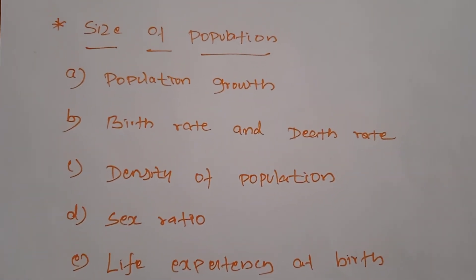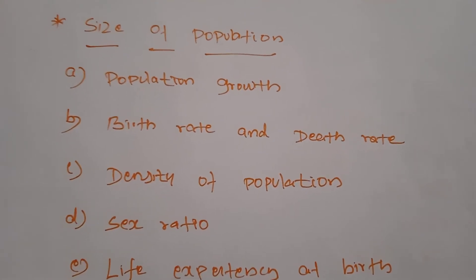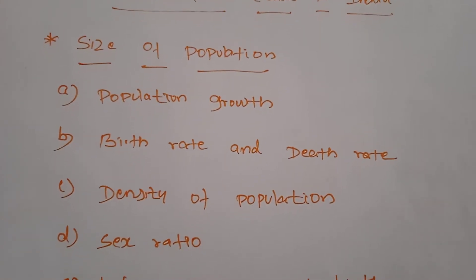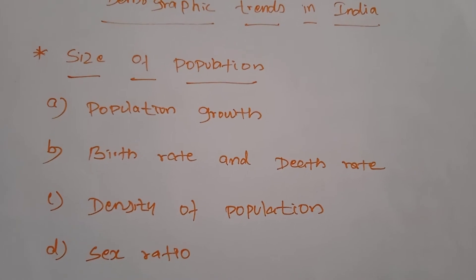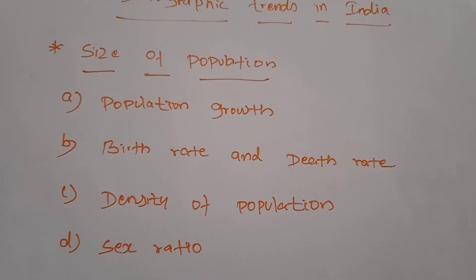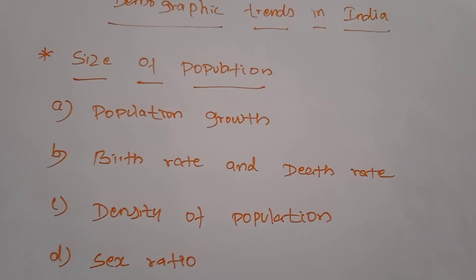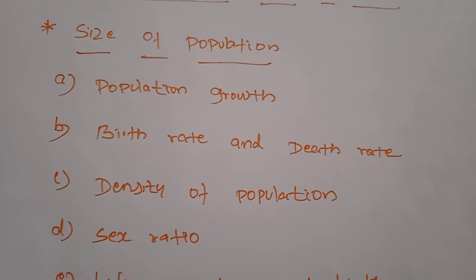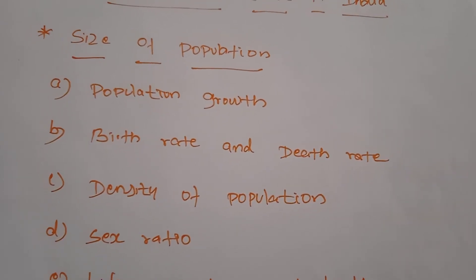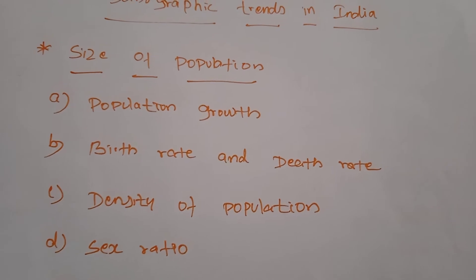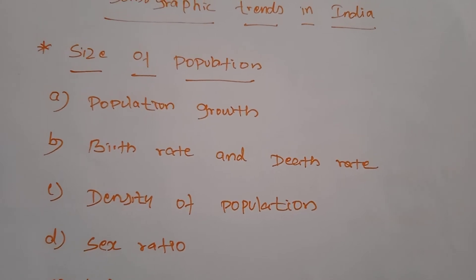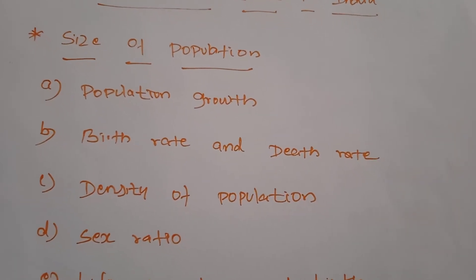During 1951, the population growth rate came down from 1.33% to 1.25%, hence it is known as the year of small divide. In 1961, the population of India started increasing at the rate of 1.96% to 2%, hence 1961 is known as the year of population explosion. To summarize: 1921 is the year of great divide, 1951 is the year of small divide, and 1961 is the year of population explosion.